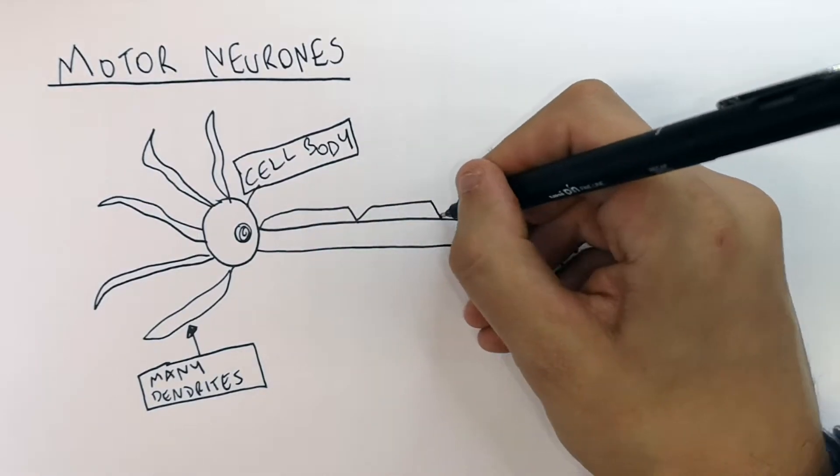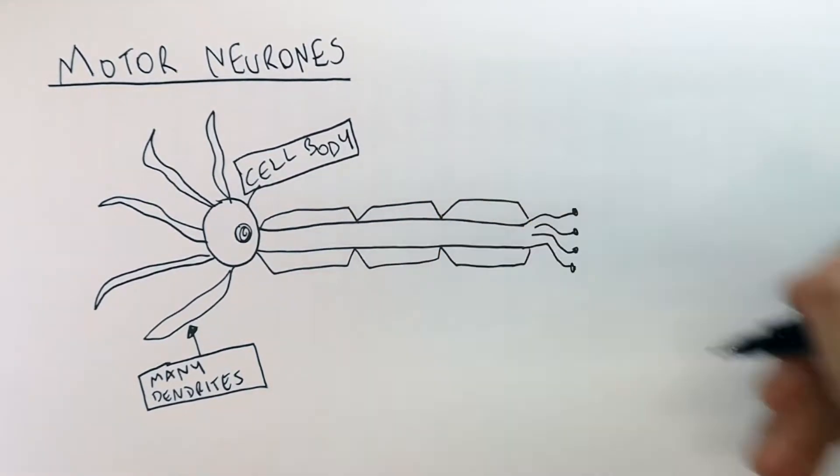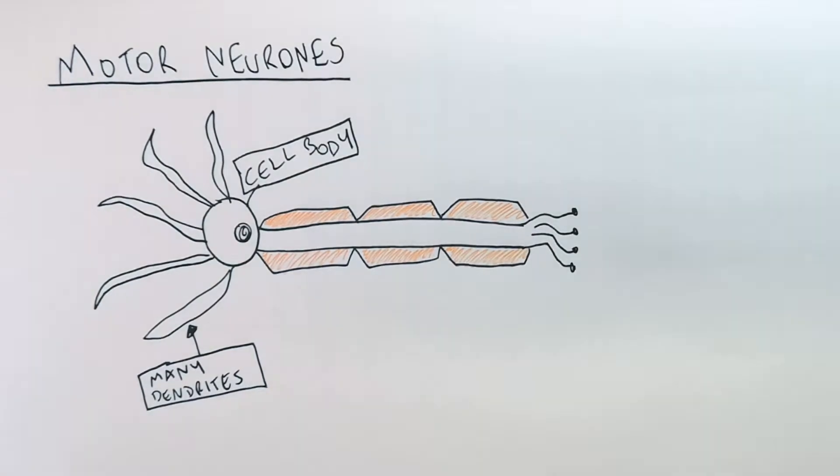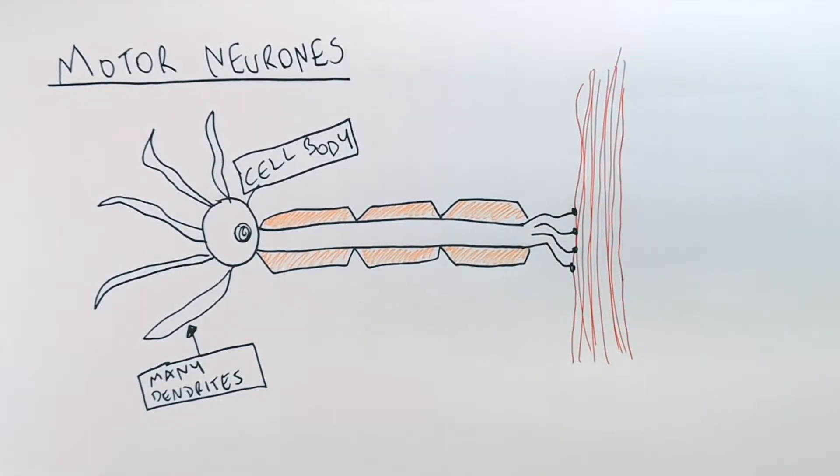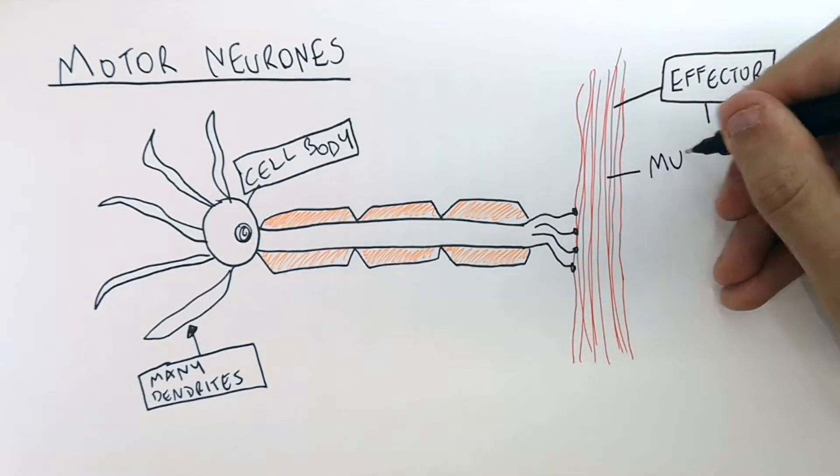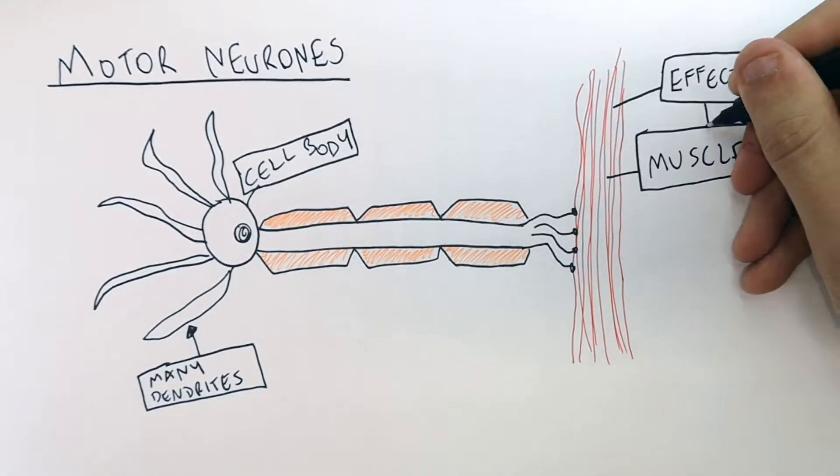The myelin sheath insulates the axon. The axon terminals are connected in this case here to an effector muscle. So this here is the effector. In this case it is a muscle. It can also be a gland.